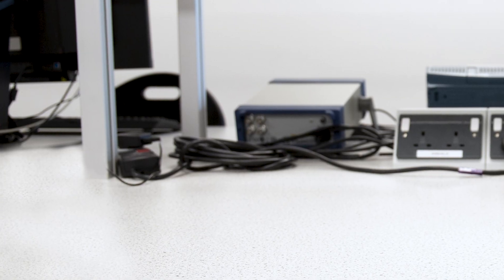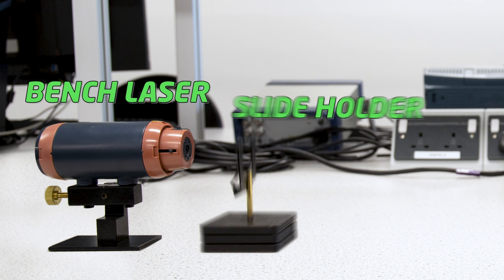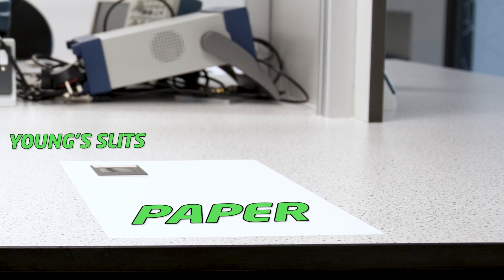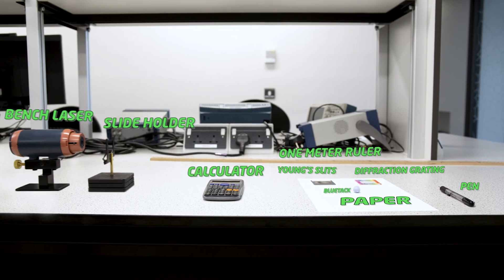In the two experiments the equipment that we'll be using is bench laser, slide holder, calculator, paper, Young's slits, diffraction grating, blue tack, pen, and a metre rule.